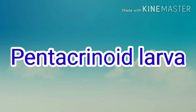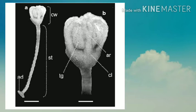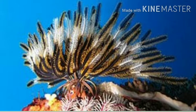The pentacrinoid larva, also called the cystidean larva, is the second larval stage of Crinoidea, found after the doliolaria larva in animals like sea lilies. It is called pentacrinoid because it closely resembles the adult Pentacrinus. The stalk develops into the pre-oral lobe. The anterior end of the antedon larva, after attachment, is prolonged into an elongated narrow stalk, and the free end becomes broader and settles on the lower surface of the sea bottom.